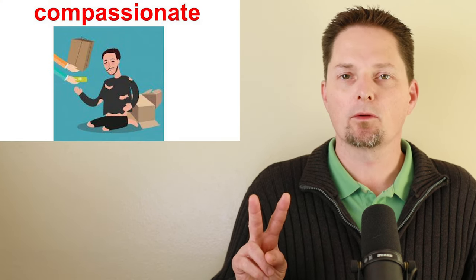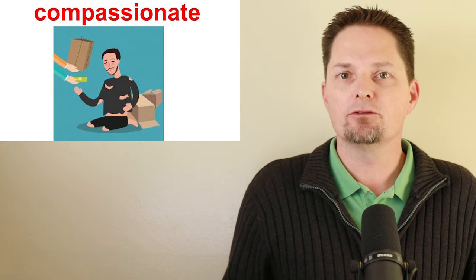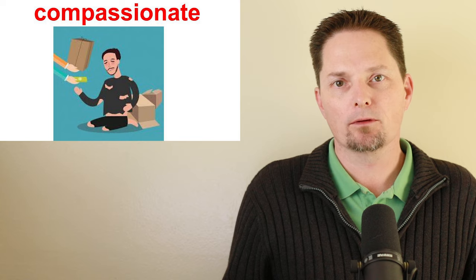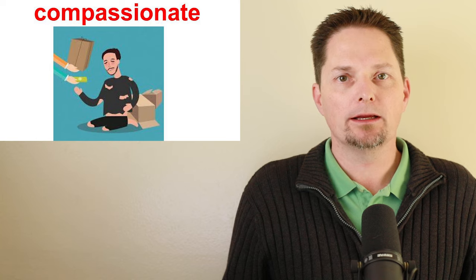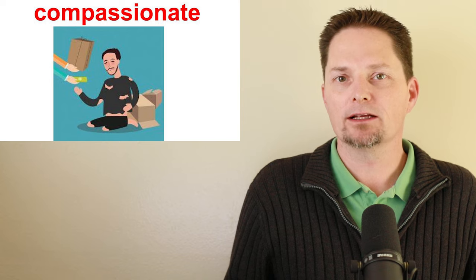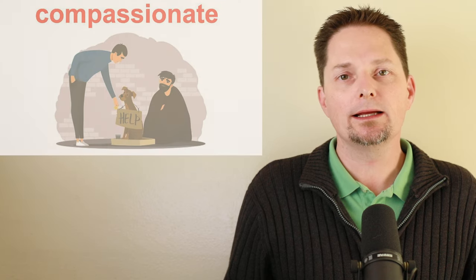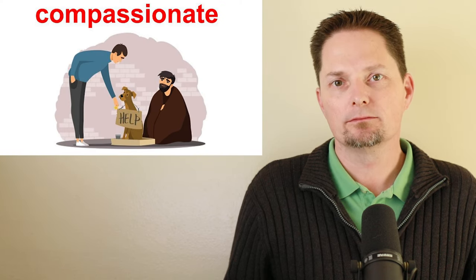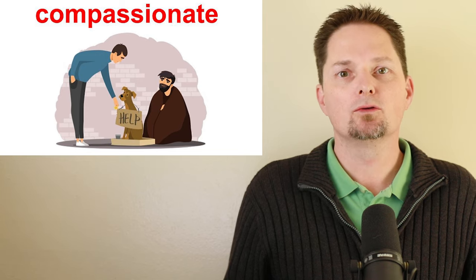Our next word is compassionate. We put the stress on the second syllable — compassionate. Compassionate means you feel sorry for other people. When someone is in pain, you feel bad for them. If they need money, you feel sorry and you give them money. Compassionate — you have feelings for others. With compassionate, we use the connector 'towards.' So, he is compassionate towards others. He gives the homeless person money, so he is compassionate toward others.